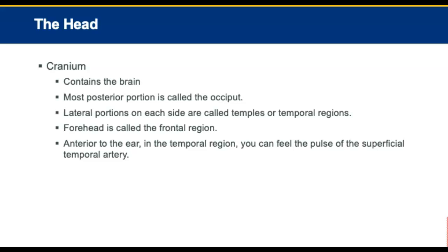The head is divided into the following. First is the cranium, also referred to as the skull, which contains the brain. The posterior portion of the cranium is called the occiput. On each side of the cranium, the lateral portions are called the temples or temporal regions. The forehead is called the frontal region. Anterior to the ear, in the temporal region, you can feel the pulse of the superficial temporal artery.